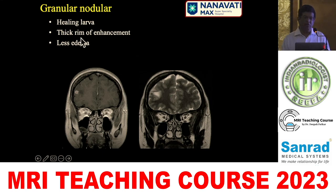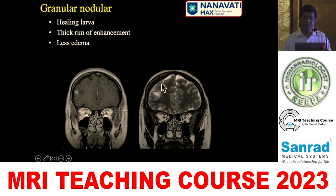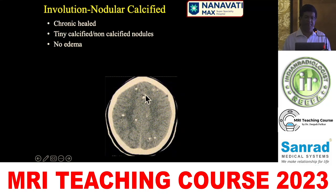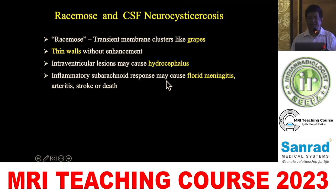The next stage is granulonodular, where the larva starts healing. The fluid in the cyst starts disappearing, so you will hardly see any brightness in the center. The capsule is darker and thicker, with much less edema. In the final stage of involution, you get calcification, no edema, and sometimes a little gliosis.